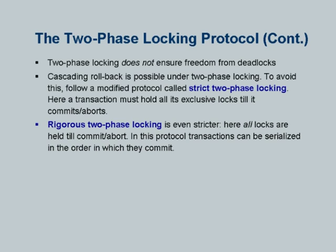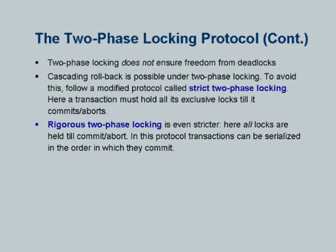What we normally do is strict two-phase locking, which says that write locks — exclusive locks — must be held until commit. Only after commit can you release them, which ensures that nobody can read uncommitted data items. If a transaction wants to read uncommitted, it does not even get a lock; it just reads the data item. The database will make sure writes can never happen without an exclusive lock. Rigorous two-phase locking holds all locks until commit or abort, and this is typically what is actually implemented.